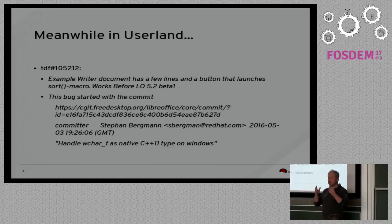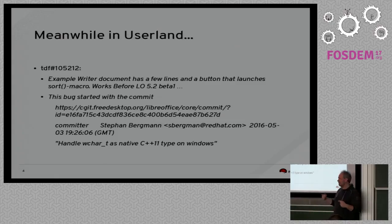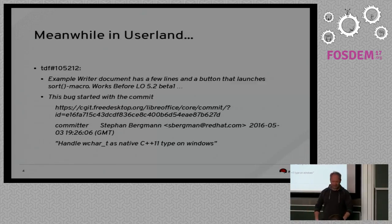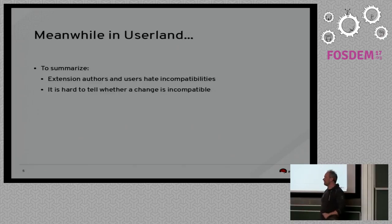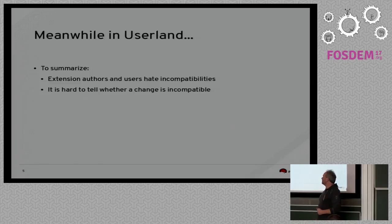At first I thought, oh my god, I broke everything — now there's no longer any interoperability between the Basic code and the Writer code. But then I checked carefully and there was just this one place where things go wrong, so I just fixed that quietly and swept it under the carpet. To summarize: the users and extension authors don't like incompatible changes, of course. And it's sometimes quite hard to tell whether a change is compatible or incompatible. You try to do your best and still you get it wrong.